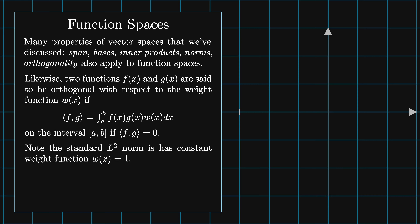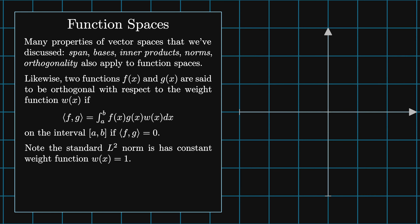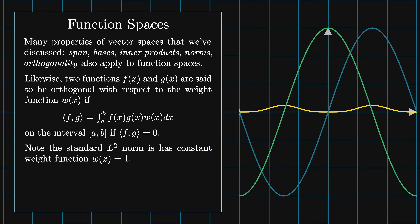For example, x and x squared are orthogonal with respect to the weight function w of x equals one on the interval minus one to one, since the integral of their product from minus one to one vanishes. Likewise, sine pi x and cosine pi x are orthogonal with respect to the weight function sine pi x squared on the interval from minus one to one, since the integral from minus one to one of sine pi x cubed times cosine pi x vanishes.